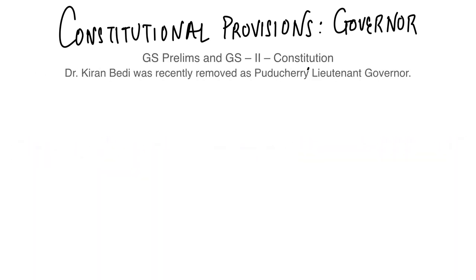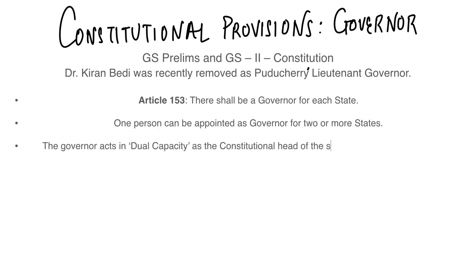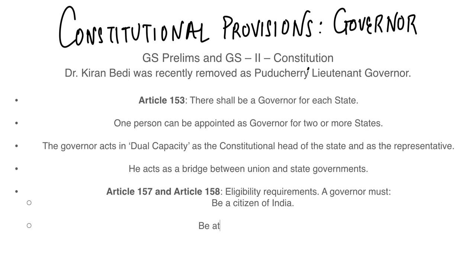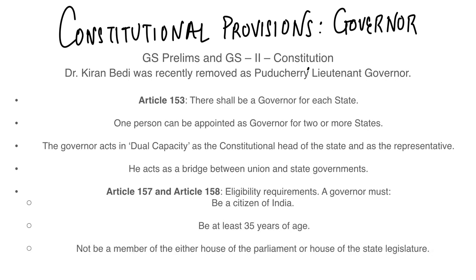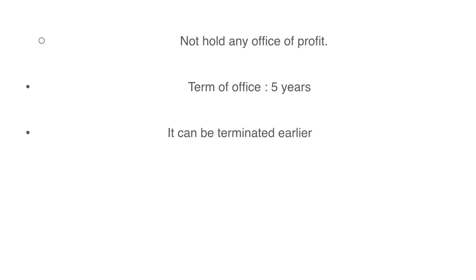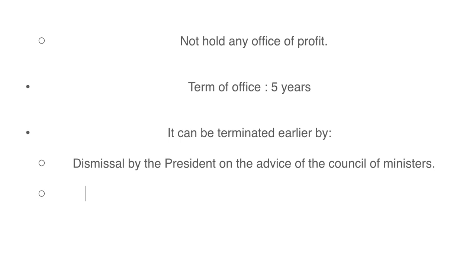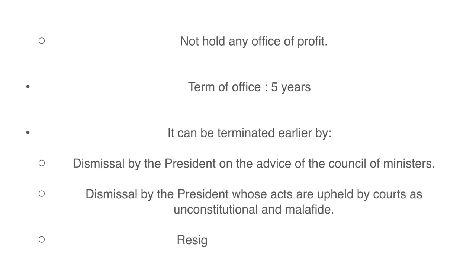The next headline is about constitutional provisions of the Governor, in the context of Dr. Kiran Bedi's removal as Puducherry Lieutenant Governor. Article 153: there shall be a governor for each state; one person can be appointed as governor for two or more states. The governor acts in dual capacity — as constitutional head of the state and as representative, acting as a bridge between union and state governments. Articles 157 and 158 cover eligibility: a governor must be a citizen of India, 35 years of age, not a member of either house of Parliament or state legislature, and should not hold any office of profit. The term of office is five years and can be terminated earlier by dismissal by the President on the advice of the Council of Ministers, or by resignation.